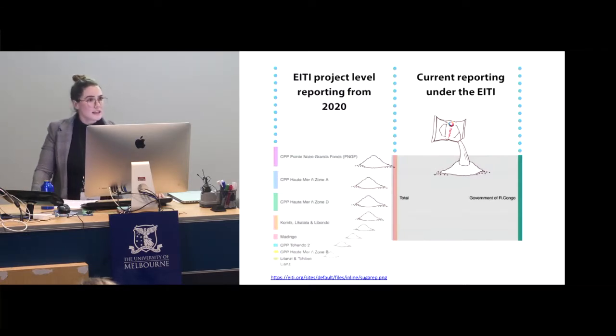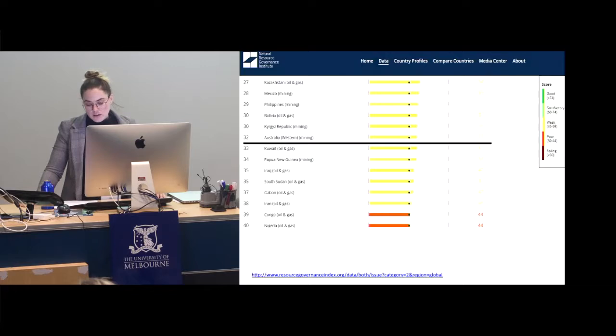There are 51 countries currently implementing the EITI. Australia is not one of them. There are 30 countries around the world that have a mandatory disclosure law, and again, Australia is not one of them. Project level reporting has been seen to be the easiest way for communities to hold governments and companies to account. We believe that at this level of disaggregation, you can actually see if your community is benefiting from extraction.